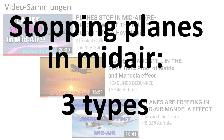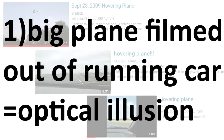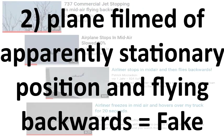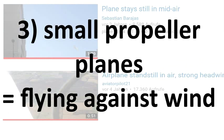If we talk about planes which stop in mid-air, we have to differentiate three types. If it's a big plane filmed out of a running car, then it is an optical illusion — that's the topic of this video. If it is a big plane filmed from an apparently stationary position and it is flying backwards, then it will be a fake — this will be the topic of my next video. If it is a small plane, then it will be the effect of strong headwind, for small planes are able to fly at low speed.